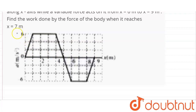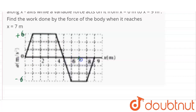So, this is plus 6 meter per second square, and this is minus 6 meter per second square. Now, we need to find work done from 0 to 7. Since 7 lies between 6 and 8, this point here is x=7.